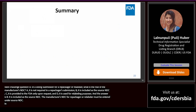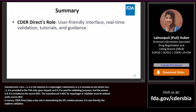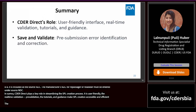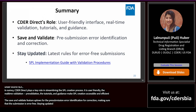In summary, CDER Direct plays a key role in streamlining the SPL creation process. It is user-friendly — the real-time validation, pre-validation, tutorials, and guidance make SPL creation accessible and efficient. The Save and Validate feature allows for pre-submission error identification and correction, making sure that the submission is error-free. Staying updated with the latest rules is essential for error-free submission and regulatory compliance.